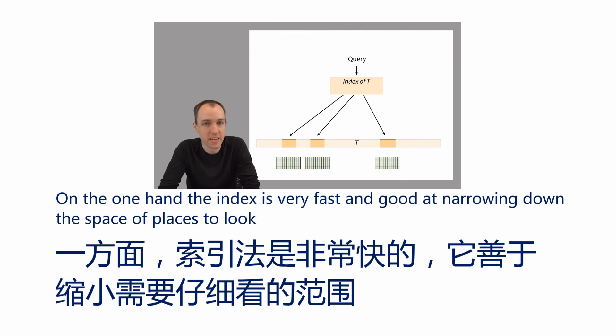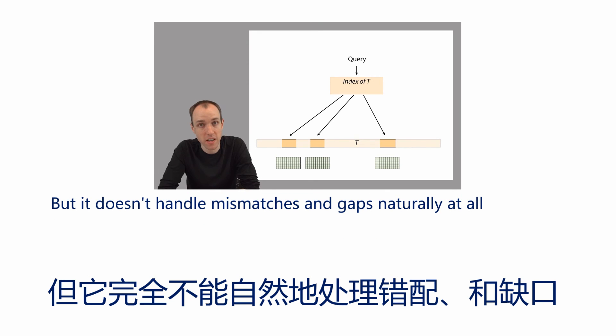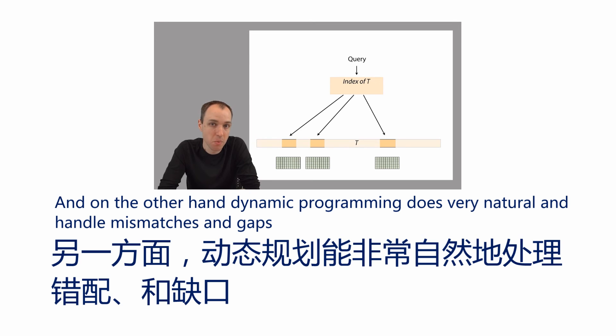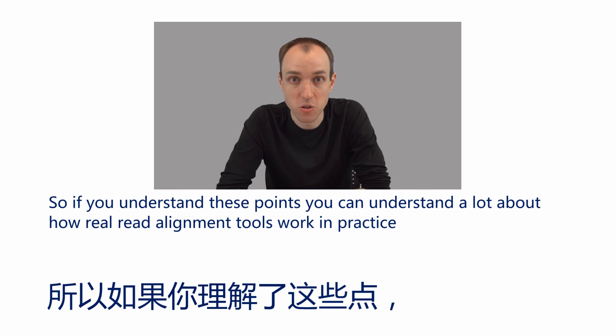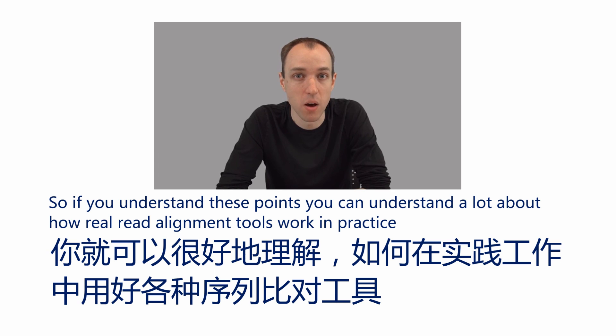On the one hand, the index is very fast and good at narrowing down the space of places to look, but it doesn't handle mismatches and gaps naturally at all. On the other hand, dynamic programming does very naturally handle mismatches and gaps, but if you relied only on dynamic programming, it would be very slow. If you understand these points, you understand a lot about how real read alignment tools work in practice.